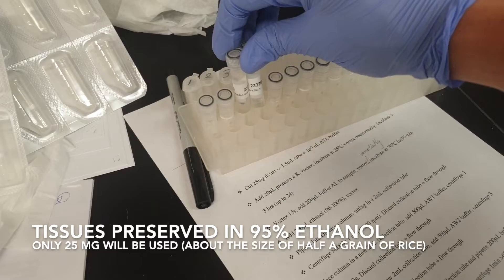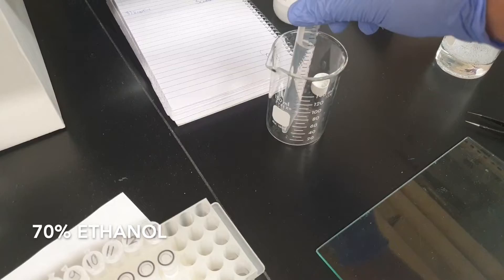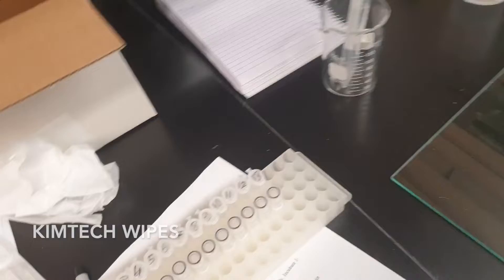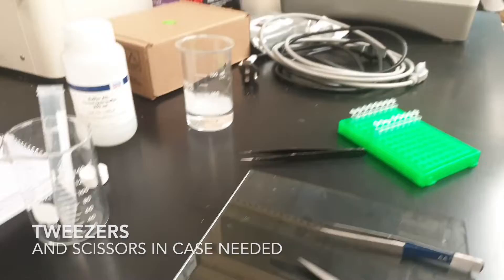We have our tissues here; we're only going to need about 25 milligrams of tissue. We have sterile 1.5 milliliter tubes, 70% ethanol, micro-cleaning solution, and chemtech wipes. We also have PCR tubes filled with sterile water, tweezers, and scissors in case we need them.